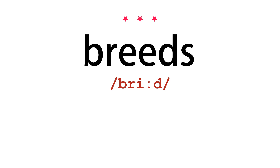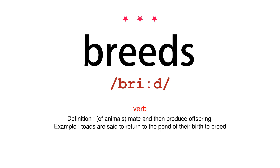Breeds. Verb. Definition – of animals: mate and then produce offspring. Example – Toads are said to return to the pond of their birth to breed.